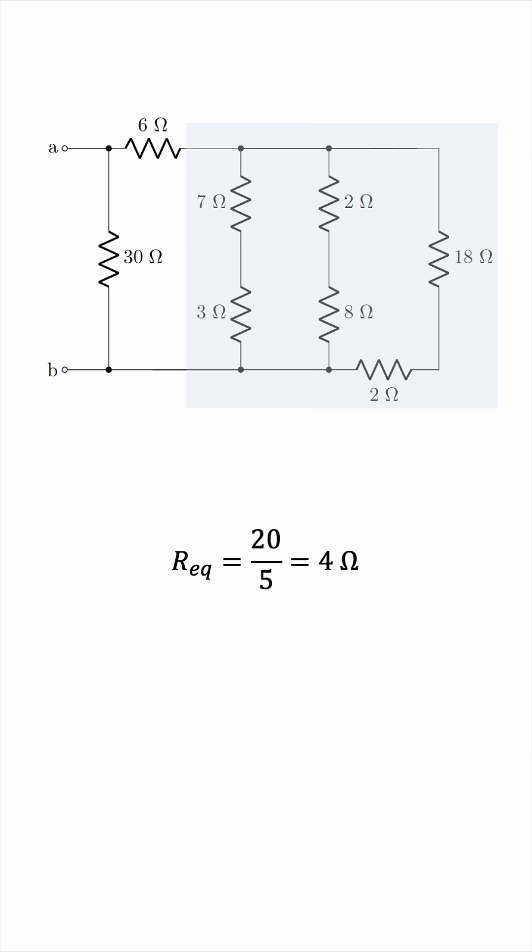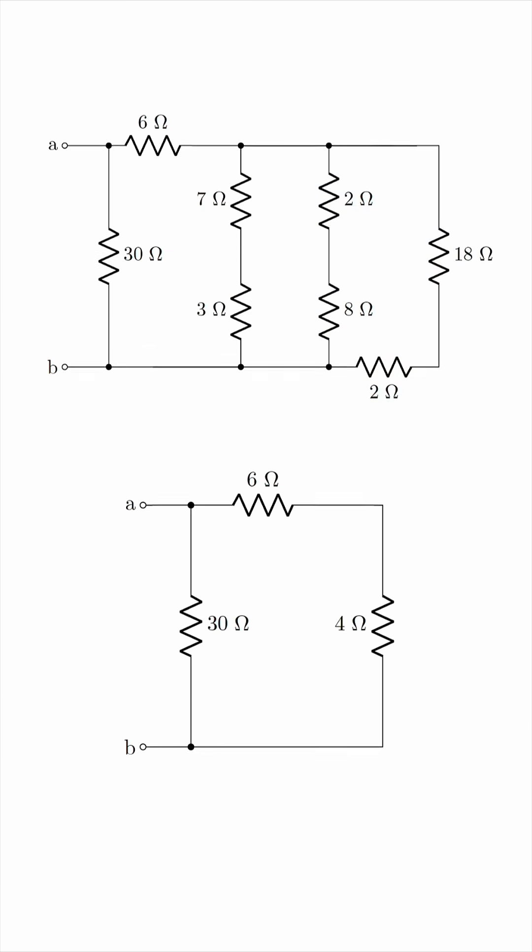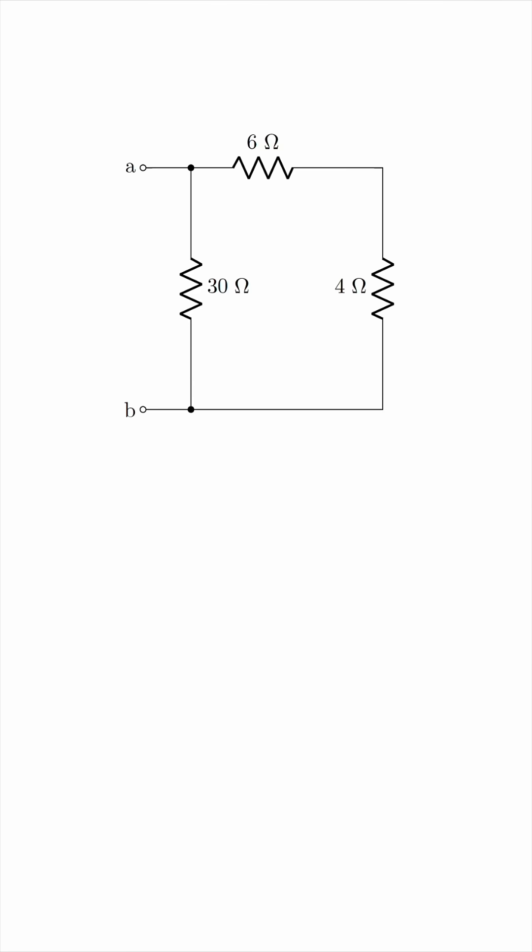Now the circuit is extremely simple. We have a parallel combination between the 30 ohm resistor and the series combination of 6 and 4. So we have 30 times (6 plus 4) divided by (30 plus 6 plus 4).